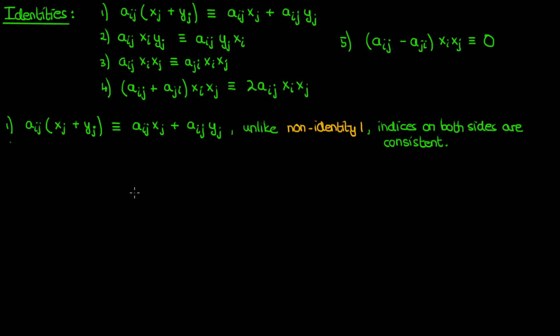On the left, i is a free index and j is the dummy index, and the same is true for each term on the right. That's why this identity holds true, and you can actually prove to yourself that I'm right by assuming that i and j run from one to three, and by expanding out both sides of the identity.